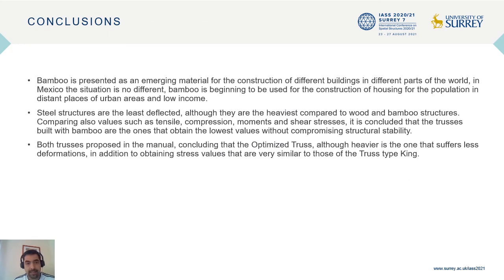Bamboo is presented as an emerging material for the construction of different buildings in different parts of the world. In Mexico, bamboo is being used for the construction of housing for populations in distant urban areas with low income. Both trusses proposed in the manual conclude that the optimized truss, although heavier, suffers less deformation, while obtaining stress values very similar to those of the truss type kink.